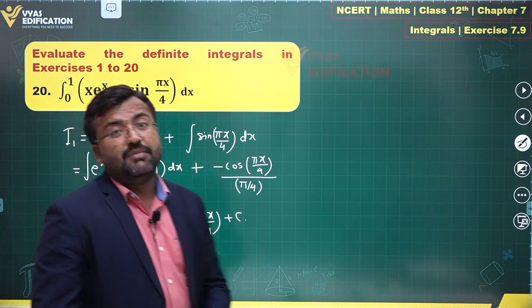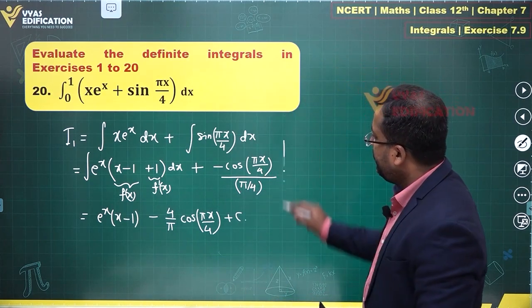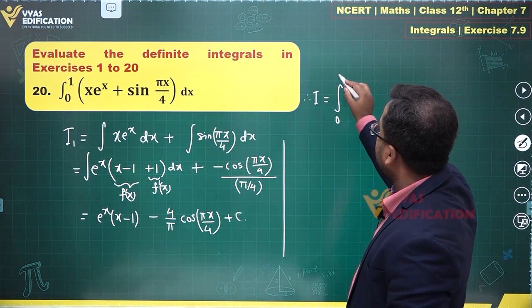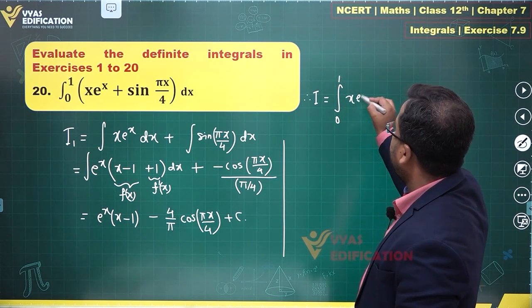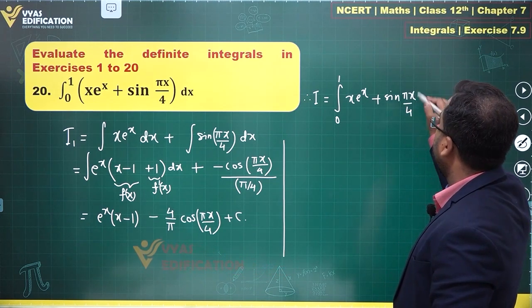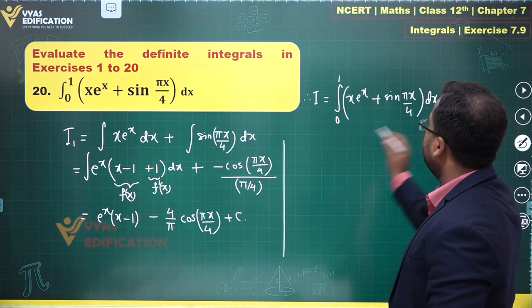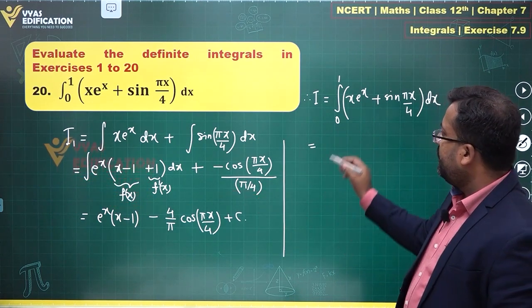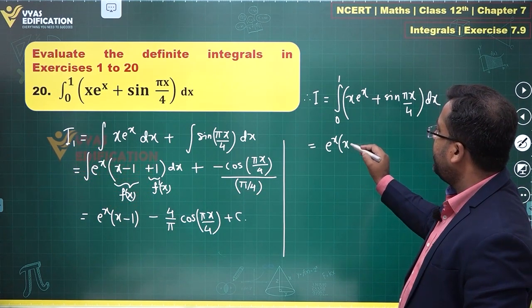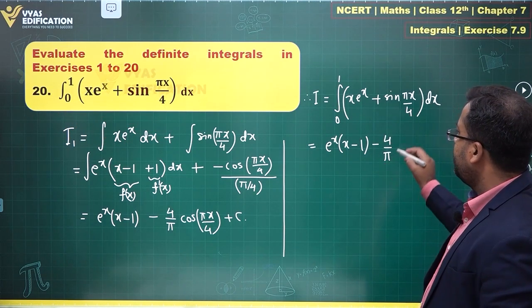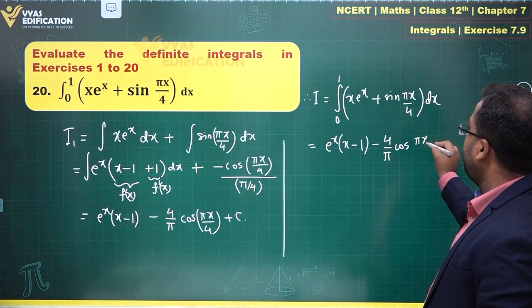That is okay, and this is also okay. That's the complete indefinite integral. Once you have found the indefinite integral, therefore I will be equal to the integral from 0 to 1 of xe^x + sin(πx/4) dx. This is further equal to e^x(x - 1) and you have -4/π·cos(πx/4).